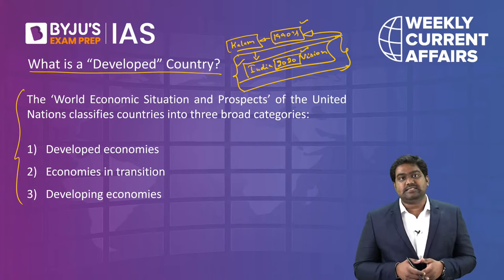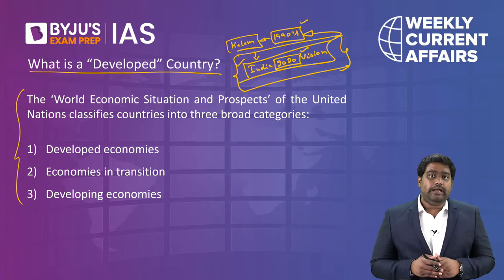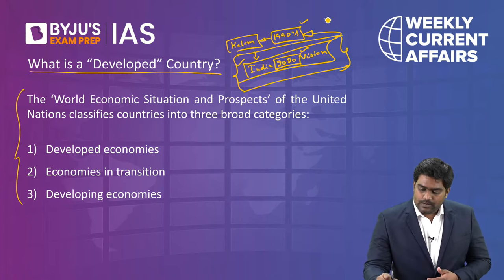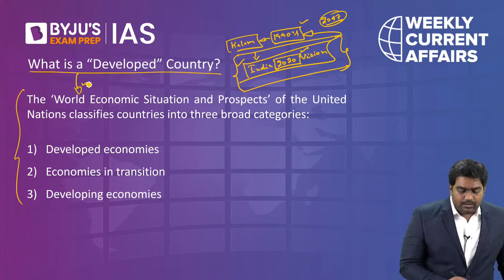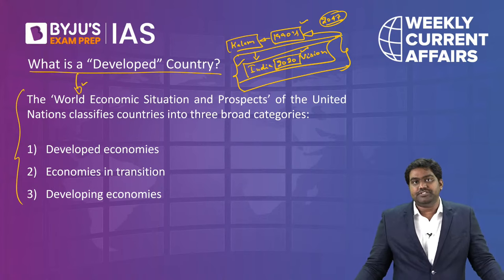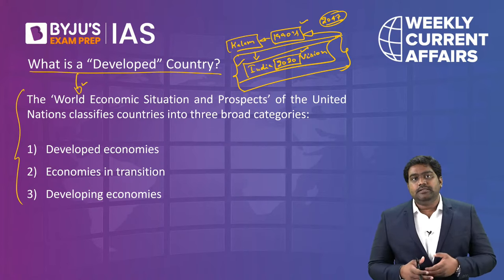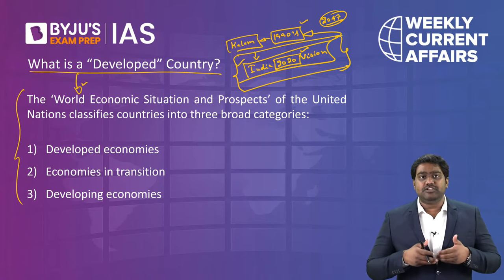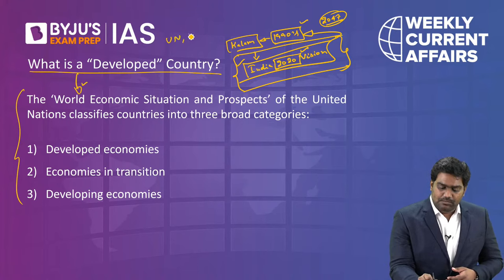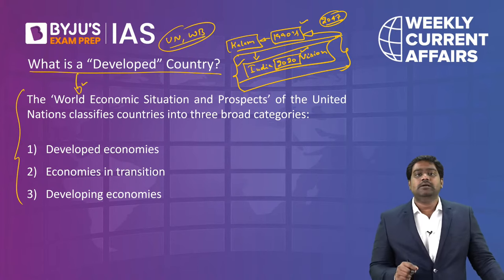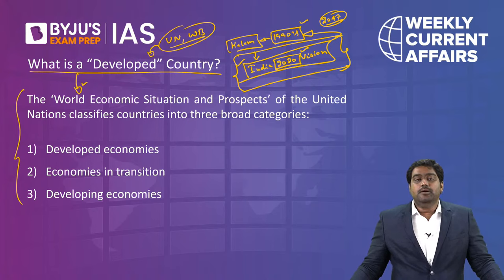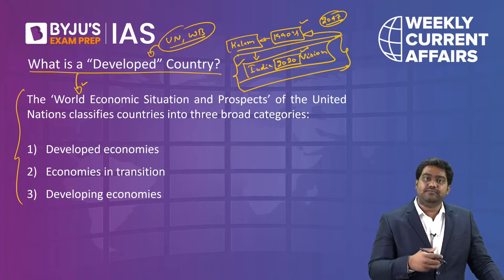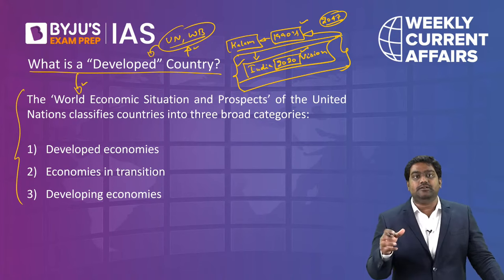So where does India stand as of today and what are the challenges ahead? The best reference is to look at definitions and categorizations by global institutions — the United Nations, the World Bank, the World Economic Forum. They all have parameters to categorize countries. The UN has something called the World Economic Situation and Prospects, a periodic assessment where every country's performance is rated and countries are placed into categories.